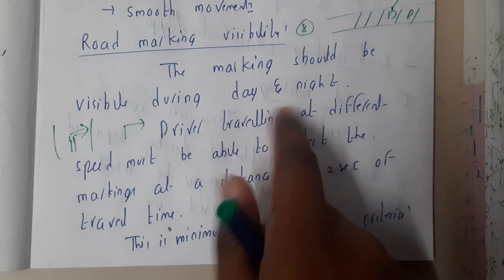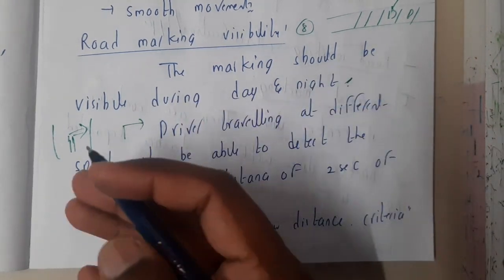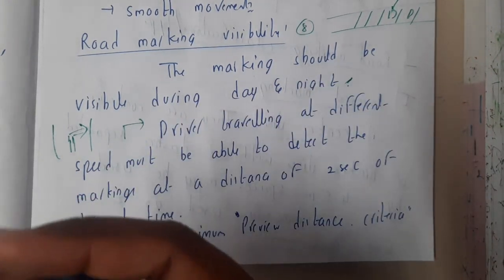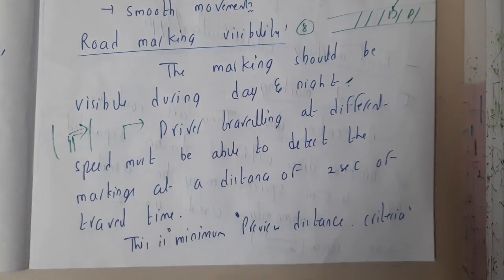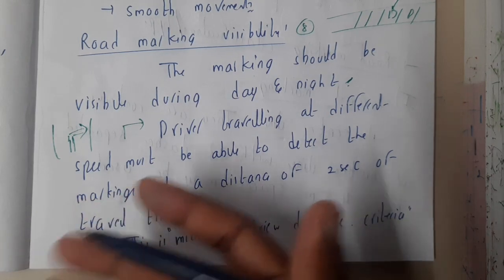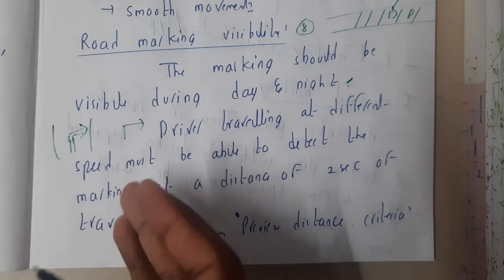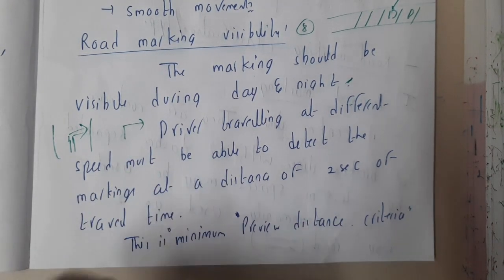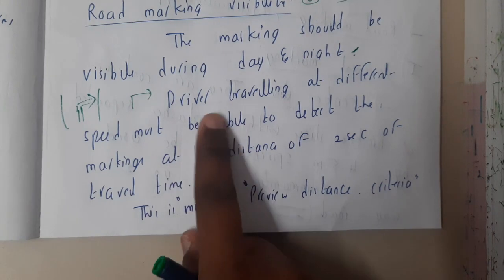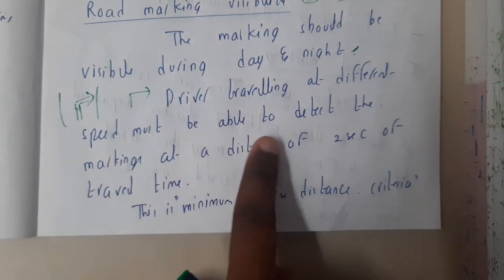The marking should be visible during both day and night. That is also mandatory — you draw it, but if it is not visible at night, what is the use of it? It should help drivers during both day and night times.